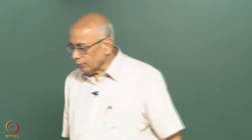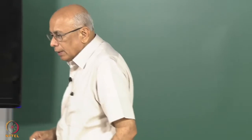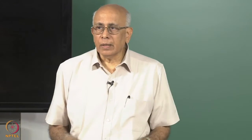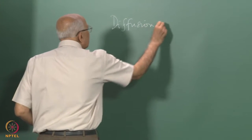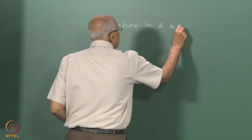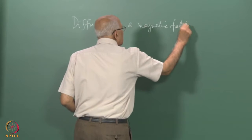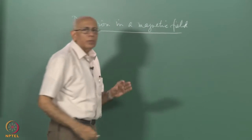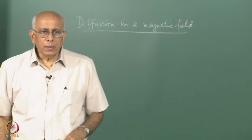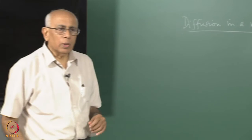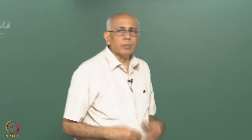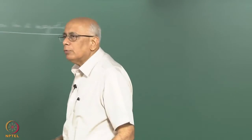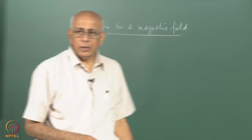Today we will try to work out the problem of the diffusion of a free particle in a fluid in the presence of an external magnetic field. This is diffusion in a magnetic field. I will assume the field is constant in space and time. There is a magnetic field B, and we have a particle of charge q and mass m moving in this field, inside a heat bath at some fixed temperature T. The question is: what does the diffusion look like, what does the diffusion coefficient look like in this case?